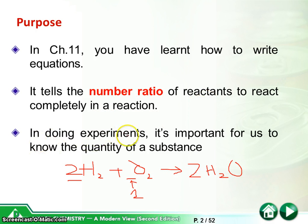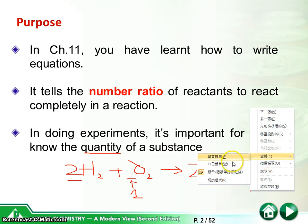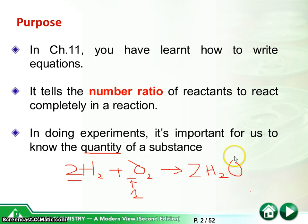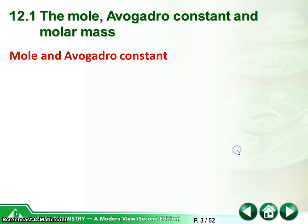In doing experiments, that's why it's important for us to know the quantity of a substance. In this chapter, we are going to talk about how we can count the numbers of the quantity of the substance.